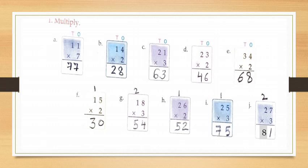Question one, multiply. Look at the first part children: eleven multiply by seven. First multiply the ones by seven — that is one into seven is seven. So write seven under ones. So your answer will be seventy seven.